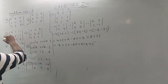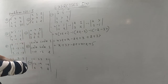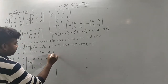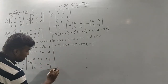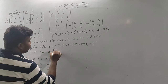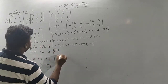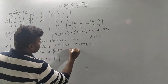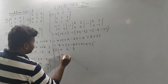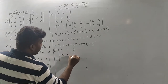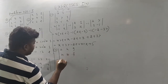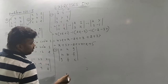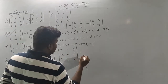Number 3. Number 4. So number 4: normal expansion. A, H, G, H, B, F, G, F, C. So normal expansion strength. So plus minus plus.